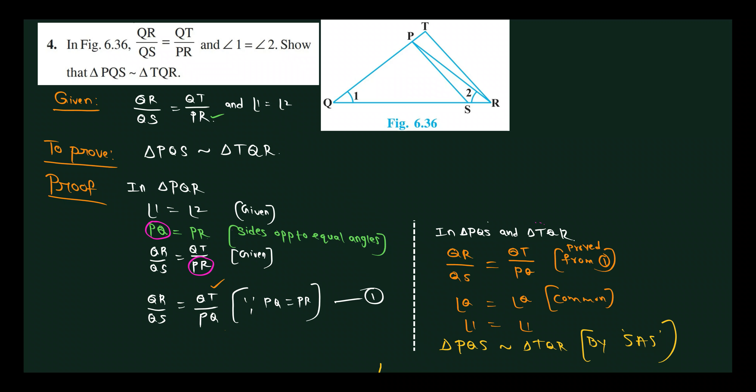In the given figure, QR by QS equals QT by QR, and angle 1 equals angle 2. We need to show that triangle PQS is similar to triangle TQR.